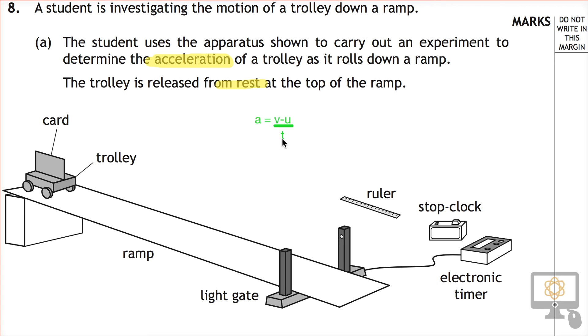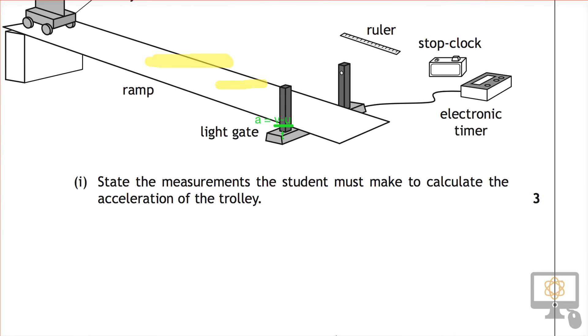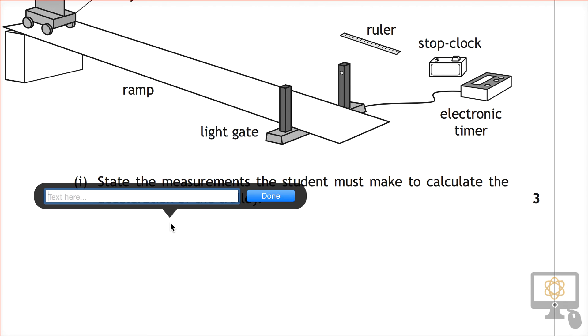So one of our measurements is definitely the time between release and reaching the light gate. So what we'll do is we can just add that in down here. We'll just put that in here and clear everything else and we'll put in our text.